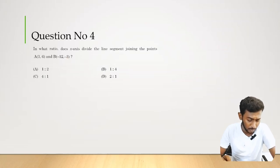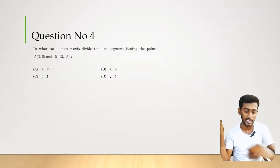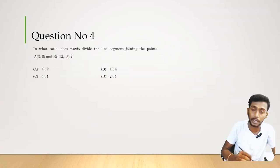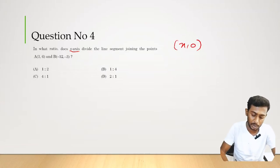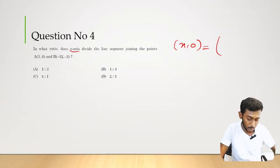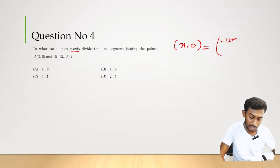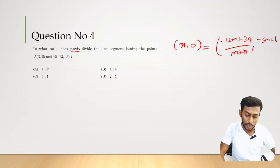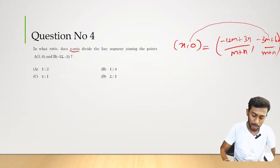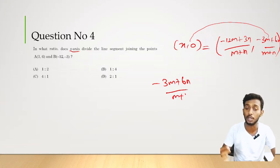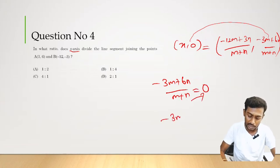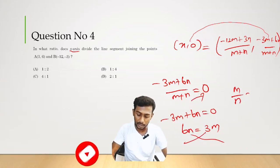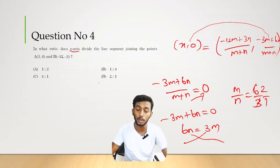Question number 4. In what ratio does the x-axis divide the line segment joining points A(3, 6) and B(−12, −3)? Using the section formula, for a point on the x-axis, the y-coordinate is 0. Applying the section formula: (−3m + 6n)/(m + n) = 0, giving 6n = 3m, so m/n = 2/1. Therefore option D is the correct answer — ratio is 2:1.